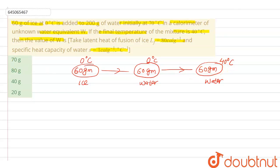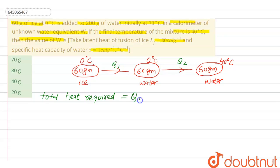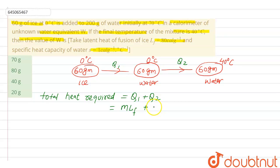The total heat required in these two processes: suppose the first process needs Q1 heat and the second process needs Q2 heat. Q1 is the heat required to melt 60 gram of ice into water at 0 degree Celsius, which is mass into latent heat of fusion. Q2 is the heat required to raise the temperature from 0 degree Celsius to 40 degree Celsius for water, which is mass into specific heat into rise in temperature.